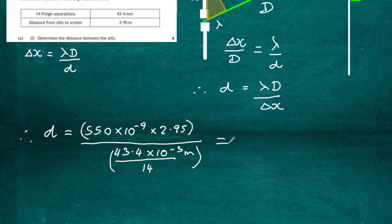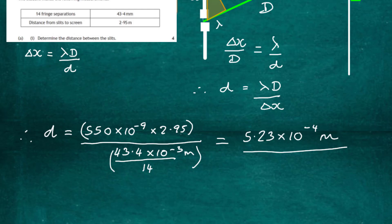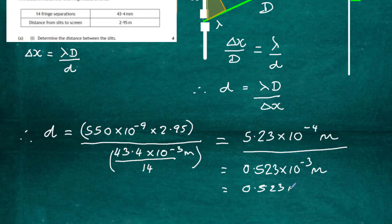Working that out on the calculator gives 5.23 times 10 to the minus 4 meters. You can convert that: 5.23 times 10 to the minus 4 meters is 0.523 millimeters, or rounding to 0.52 millimeters. So the distance between the slits is 0.52 millimeters.